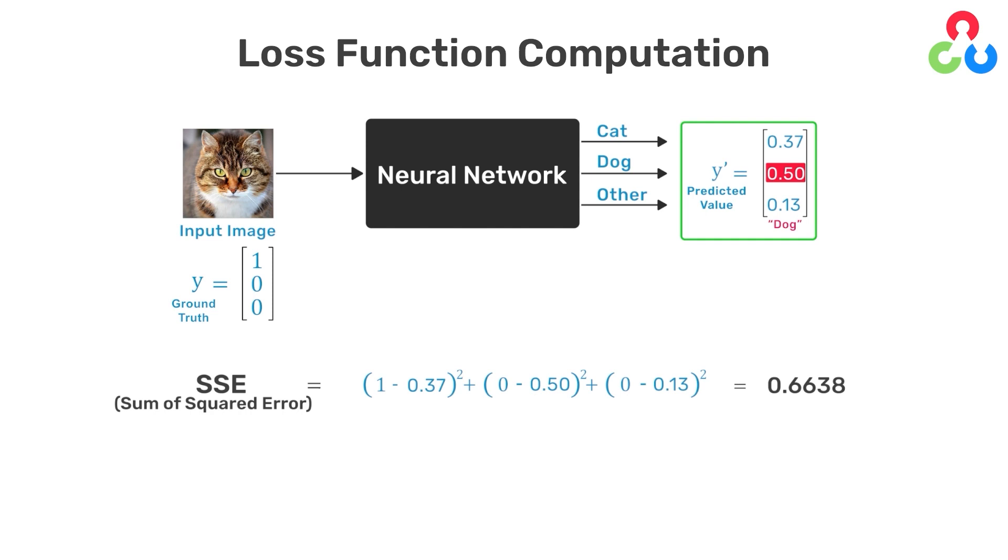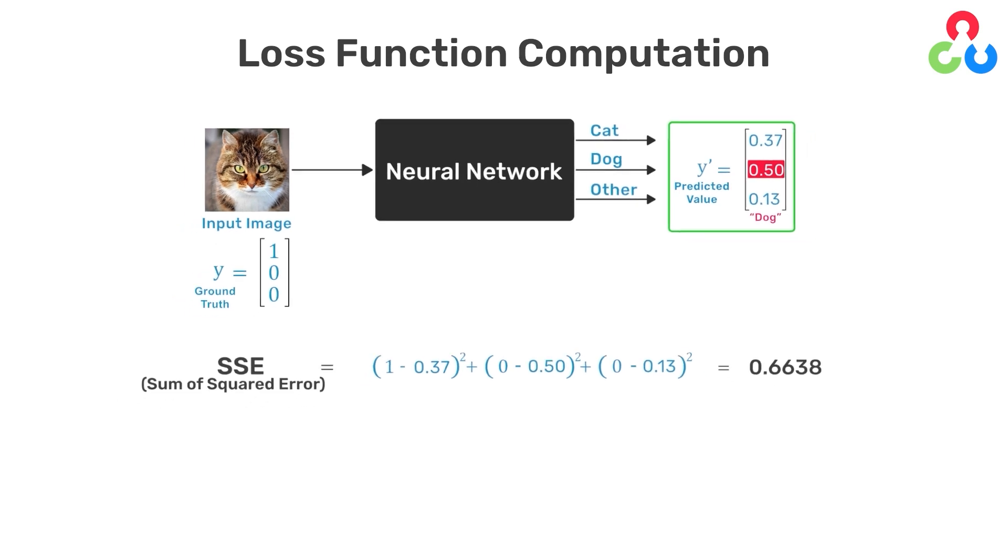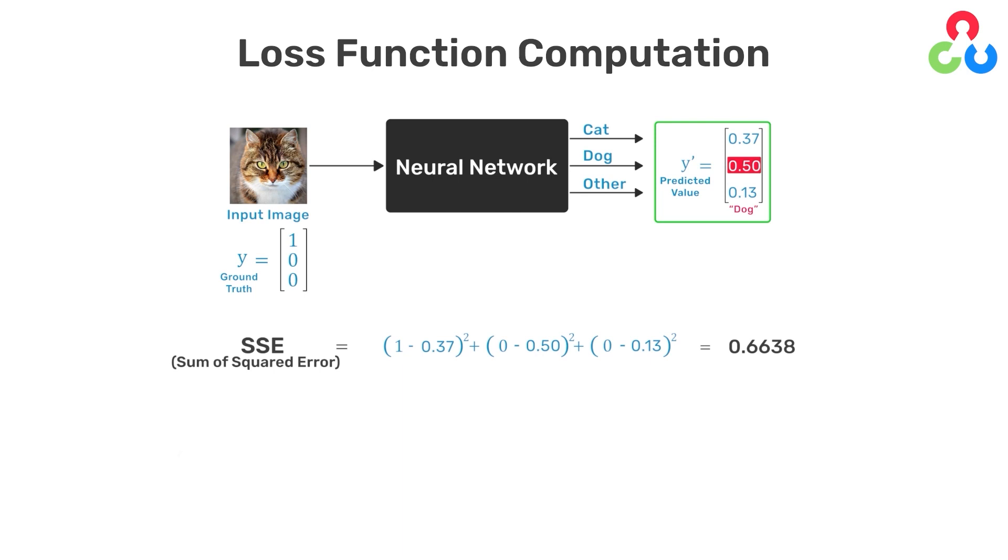When neural networks are trained in practice, many images are used to compute a loss before the network weights are updated. And therefore, the next equation is often used to compute the mean squared error for a number of training images, which is just the mean of the sum of squared errors for all the images that were used. Other loss functions can also be used. However, they all require a numerical representation for the input image class label and the predicted output of the network.